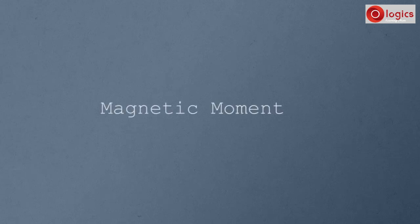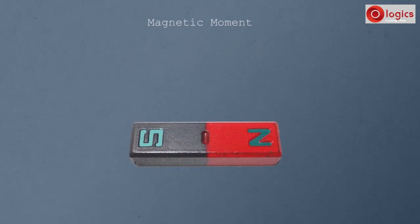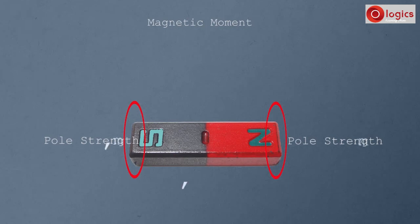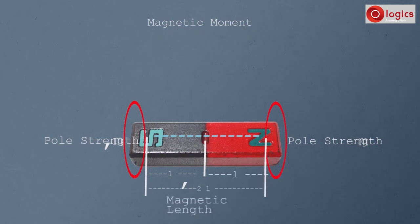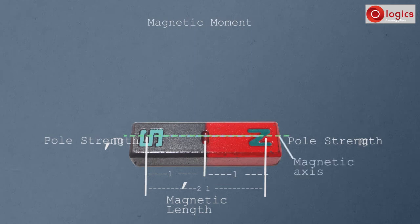Let us understand about magnetic moment. This is a magnet. A magnet has pole strength, generally denoted by m. The magnetic length of the south pole is L, and the magnetic length of the north pole is also L, so the total magnetic length is L + L = 2L. This total length is called the magnetic axis. Magnetic moment is pole strength into magnetic length.